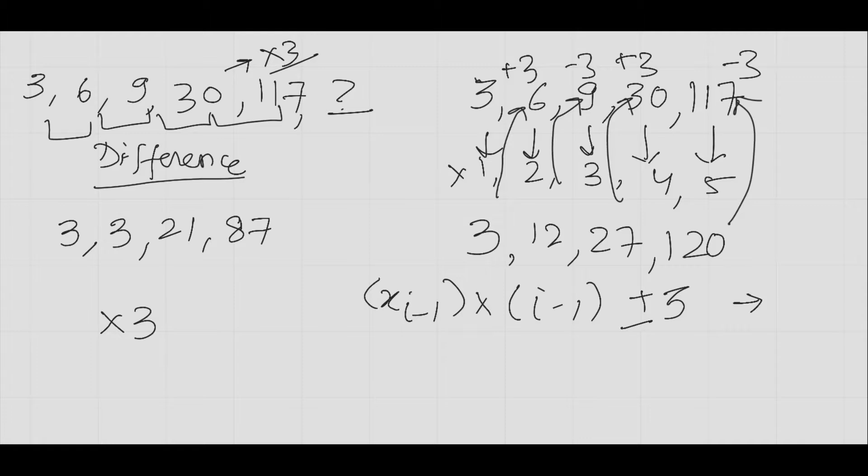What will be the next number in the sequence? It would be 117 times 5. Since last time it was subtracted, this time it will be added: 117 × 5 = 585, plus 3 equals 588.